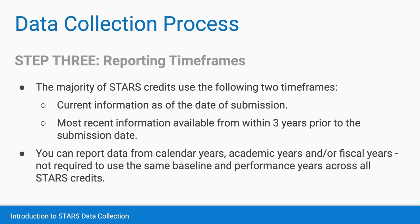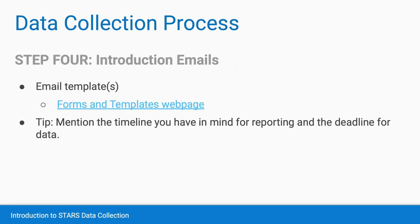For instance, it's perfectly acceptable to use the most recent fiscal year for some credits, a recent calendar year for others, and to report on a current program that launched two years ago for another credit. While you're familiarizing yourself with STARS and figuring out exactly what data you need and from whom, you may want to go ahead and send out some introductory emails to folks you know you'll be asking for data. This can soften your future data request a little bit by giving them a heads up about what STARS is and the timeline you have in mind for gathering data and submitting the report. You can find some example templates on the STARS website under the forms and templates section. One tip to keep in mind when you send out your introduction emails is that it can be helpful to mention the timeline you have in mind for reporting and the potential deadline for data. Setting a faux deadline can ensure that you stick with your submission time frame.